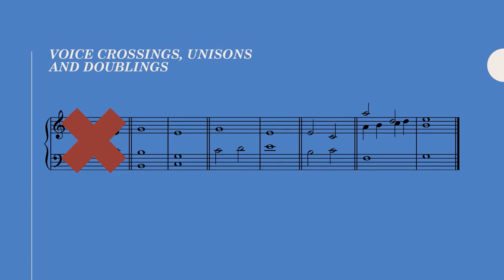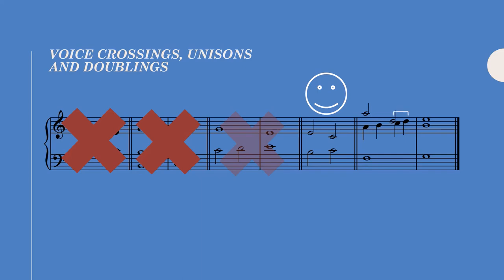In counterpoint, any doubling is allowed — even of the leading tone — except when the leading tone is in the bass. In this example, we're in C major and we're doubling the leading tone B, but since the leading tone is in the bass, it's not allowed. In two and three-voice counterpoint, we cannot approach unisons on the downbeat. In four or more voices we can, but sparingly, and it should really be justified melodically. Unisons on the weak beats approached in contrary motion are ideal. Unisons approached on a weak beat in oblique motion are also acceptable.